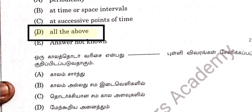Question 94: A time series is a set of data recorded periodically over time or space interval, or at successive points of time. Option D — all of the above is correct.